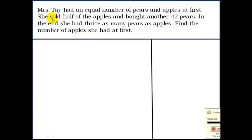She sold half of the apples and bought another 42 pears. In the end, she had thrice as many pears as apples. Find the number of apples she had at first, that's the question.